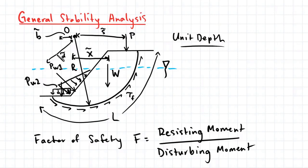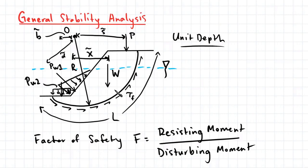We also have a water table here, and this water table has caused hydrostatic pressures to act on the front of the soil element, which are represented by these pressures here. These pressures can be simplified into forces represented by Pw1 and Pw2. We also have a force P acting at the top of the soil element, which can represent surcharge. Finally, we also have a force due to the weight of the soil element, represented by W.